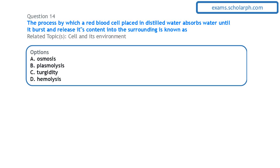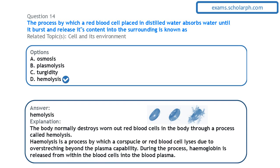Next question on cell and its environment: the process by which a red blood cell placed in distilled water absorbs water until it bursts and releases its content is called haemolysis. This happens when a cell is placed in a hypotonic solution — a solution of low concentration. The contents of the red blood cell are of higher concentration than the distilled water, so the cell draws in water, becomes turgid, and further absorption leads to bursting — haemolysis.